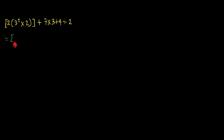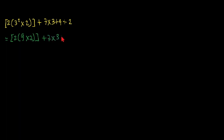So we have 2, then 3 squared, that is 9, times 2, plus 7, times 3, plus 4, divided by 2. Then we have 9 times 2, that is 18.